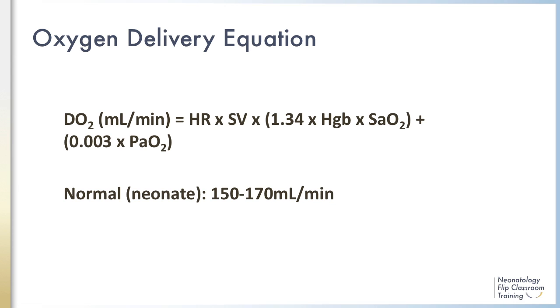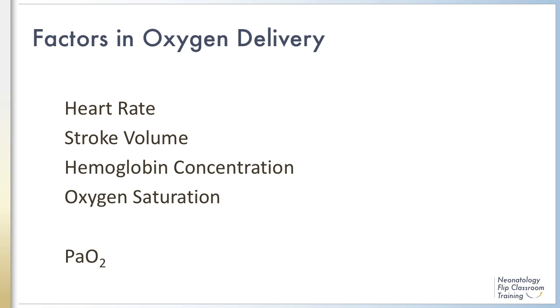Normal in a neonate is around 150 to 170 milliliters per minute. The factors in oxygen delivery are the heart rate, the stroke volume, the hemoglobin concentration, and the oxygen saturation. The PaO2 also plays a role, but it's a little bit less because it's multiplied times that small solubility factor.